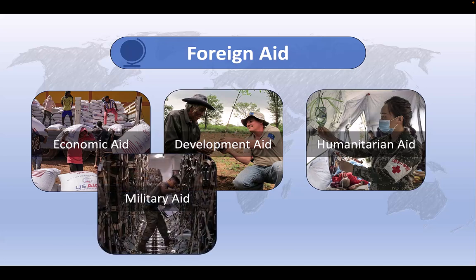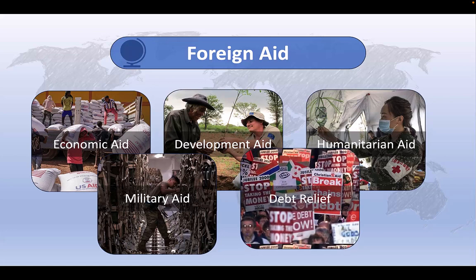Military aid involves the provision of assistance such as weapons, military equipment, training, or advisory support to bolster the recipient country's defense capabilities. Military aid is often used to strengthen alliances, to promote regional stability, to support counterterrorism efforts, or to enhance the recipient countries' capacity to respond to security threats. Finally, debt relief initiatives aim to reduce the burden of debt for heavily indebted developing countries. This assistance can take the form of forgiving or restructuring debt, extending loan payment periods, providing financial support to help countries manage their debt obligations, all of which intends to redirect resources towards other development priorities.